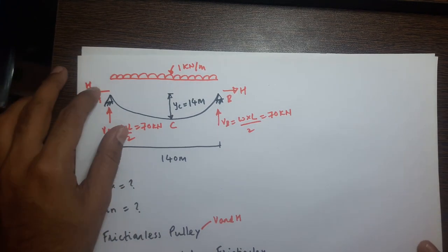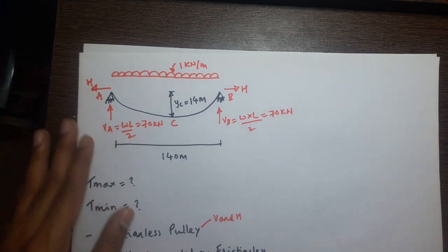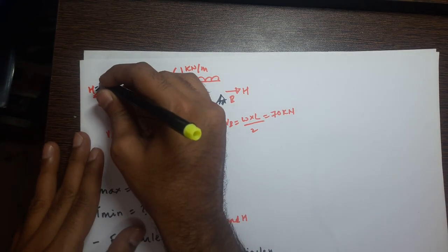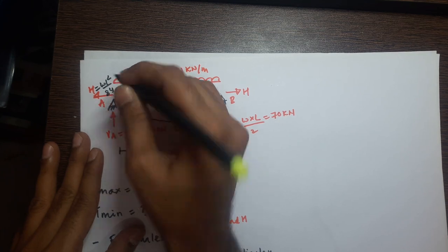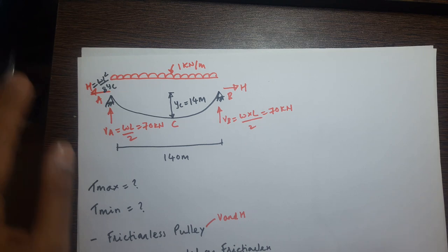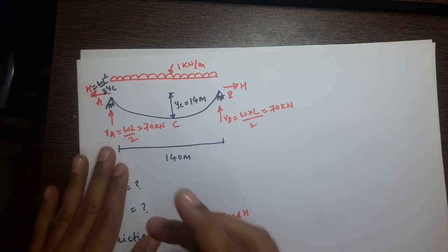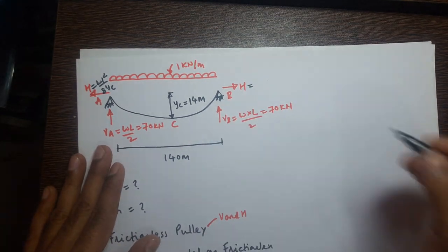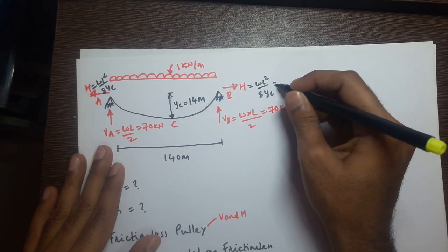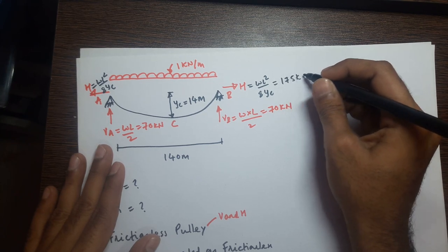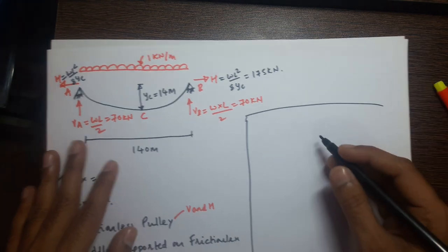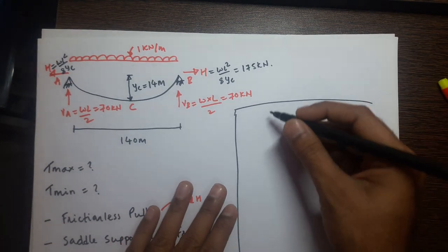To find the horizontal thrust H, we use the formula H = W L² / (8 yc). Substituting values: H = 1 × 140² / (8 × 14) = 175 kilonewtons.